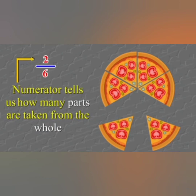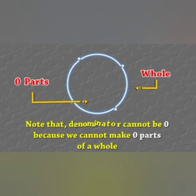According to the number of parts, its fraction will be 2 upon 6. The denominator can never be 0, because the part of a whole can never be 0. So we must always remember: the denominator cannot be 0, because we cannot make 0 parts of a whole.